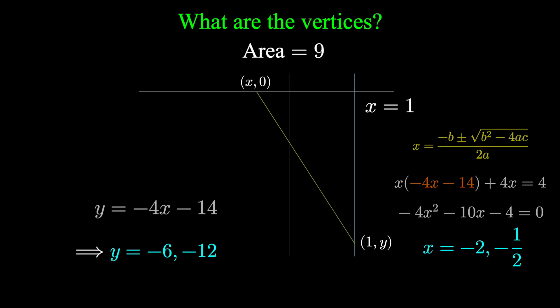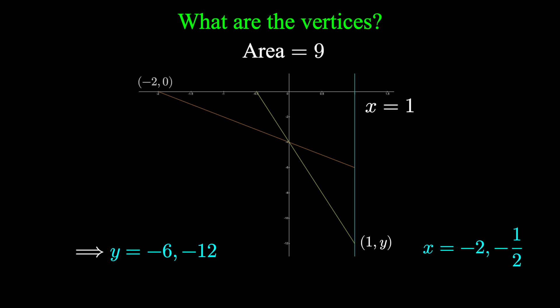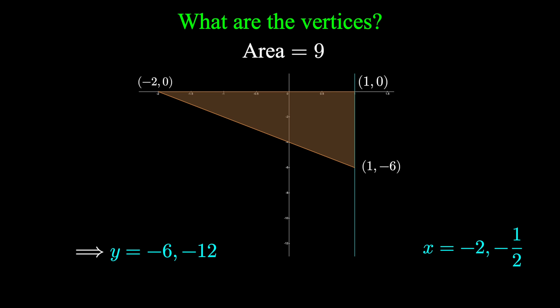Remember what these values represented: x was the value along the x-axis, y was the value along the line x equals 1. So our points were negative 2, 0; 1, 0; and 1, negative 6. That's one triangle with area 9 formed with these restrictions.